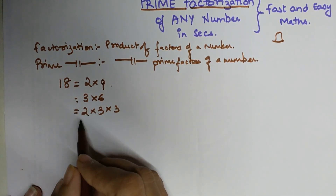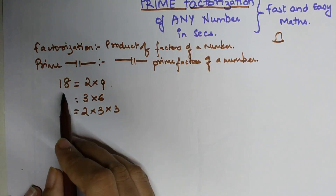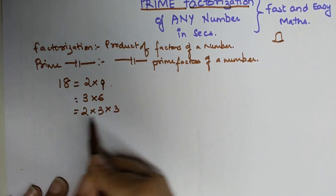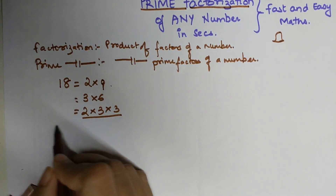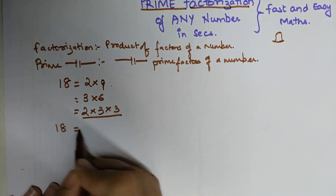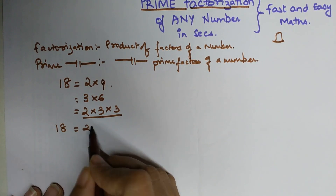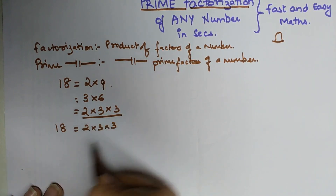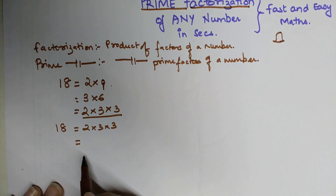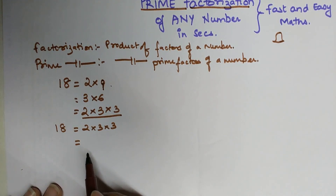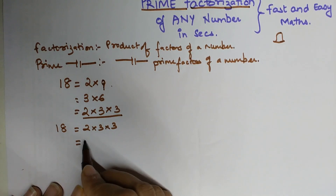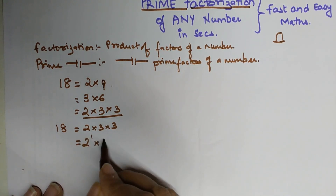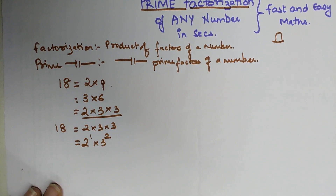So in order to represent 18 in terms of prime factorization, we will use this method. The prime factors of 18 are 2 into 3 into 3. Since prime factors are always written in the form of their exponents, 18 will be written as 2 raised to 1 into 3 raised to 2. Understood?